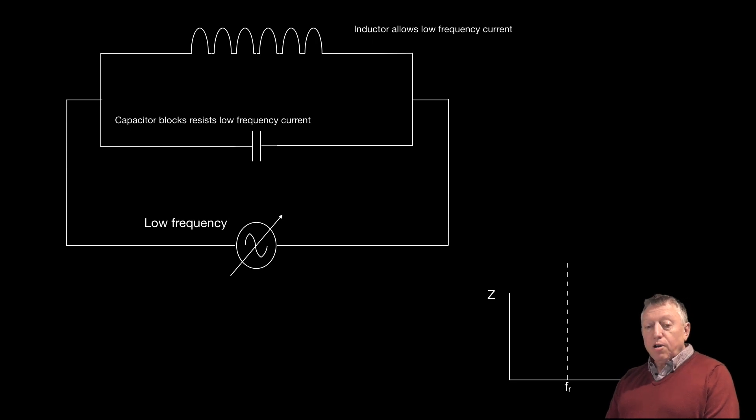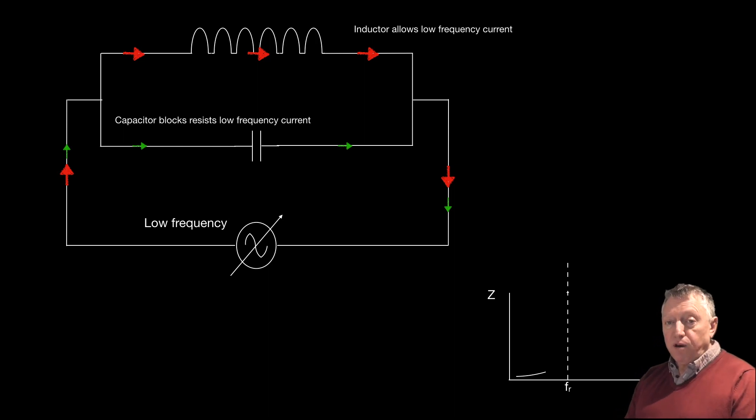Now, as we start at the low frequency and we work our way up, initially most of the current flows through the inductor. And that's shown by the large red arrows there. And very little flows through the capacitor because the frequency is low, and the capacitor is resisting the current flow.